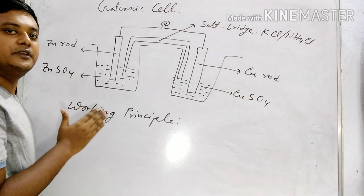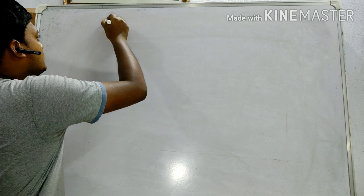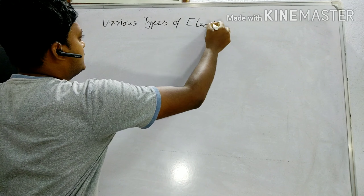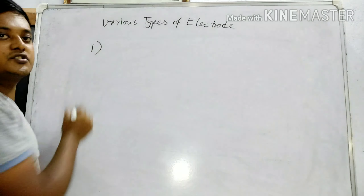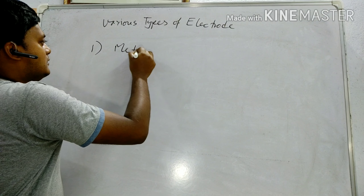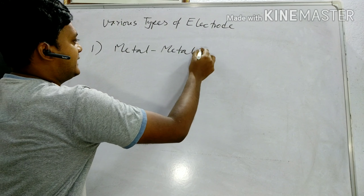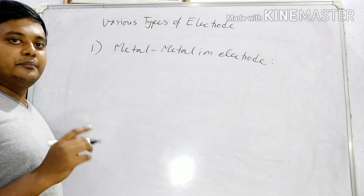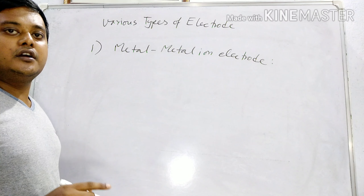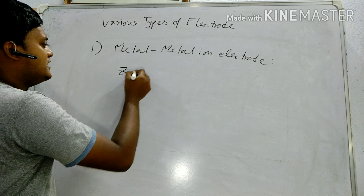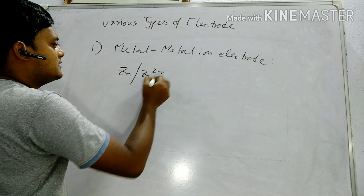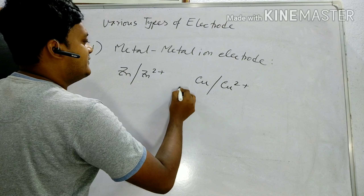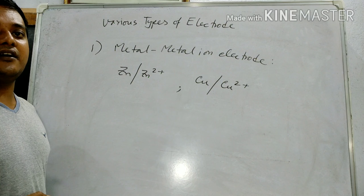Types of electrodes — first: the metal-metal ion electrode. In this case, a metal is dipped into a solution containing its own ion, like zinc dipped in zinc sulfate solution or copper dipped in copper sulfate solution.